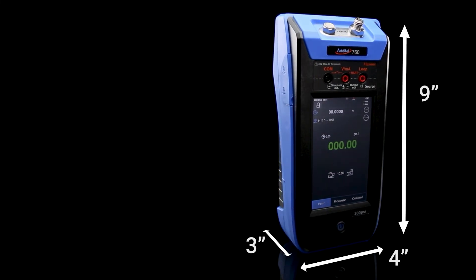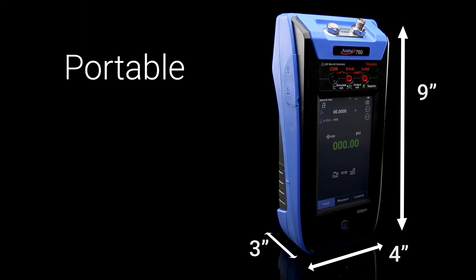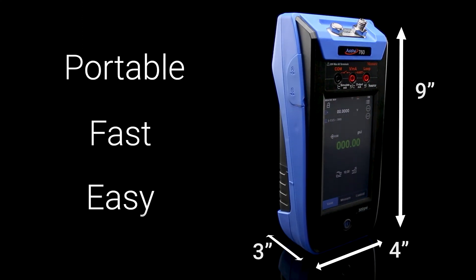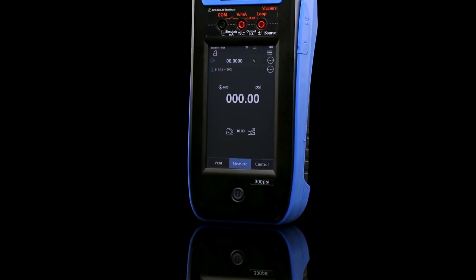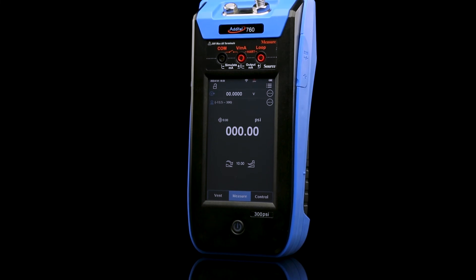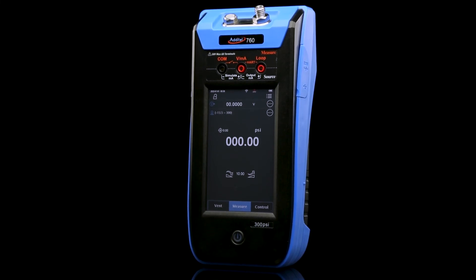Weighing in at just under 4 pounds, there has never been a more portable, fast, and easy way to calibrate your devices. The Additel 760 is the all-in-one tool that no calibration technician should go without.